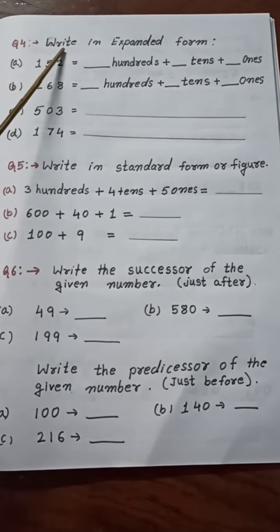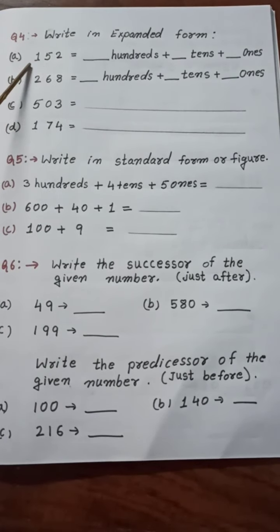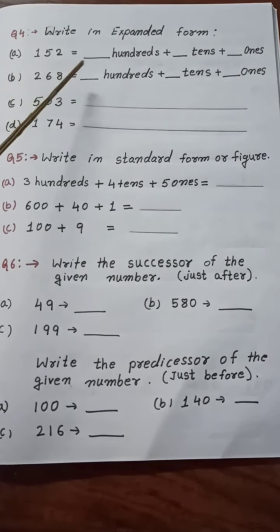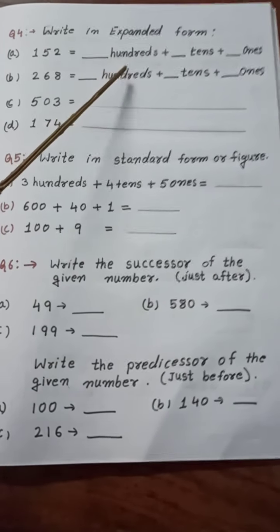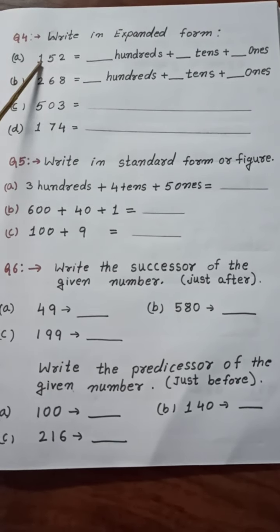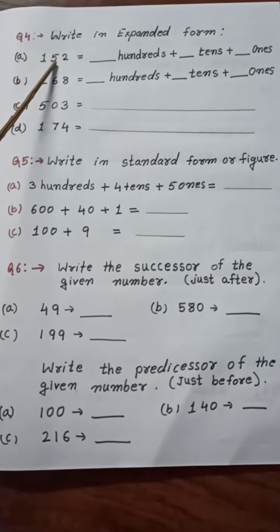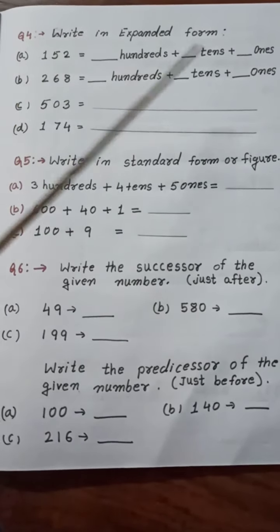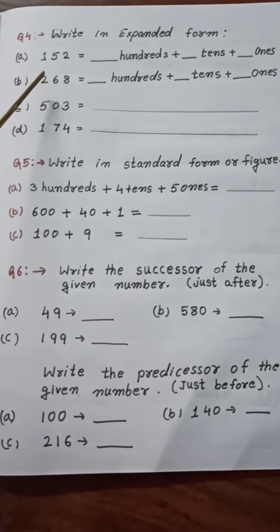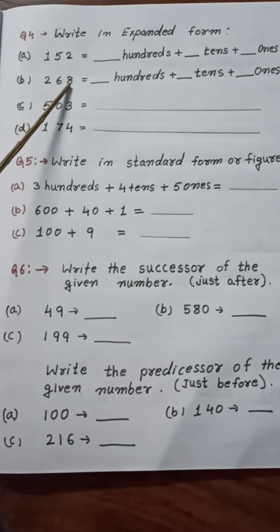Next question: write in expanded form. Here is given number 152 and we have to expand this number. The answer can come in two ways. First: 1 is at the 100s place, so we write 1 hundred. Then 5 tens and 2 ones. Same way here — 2 is at the 100s place, so we write 200, 6 tens, and 8 ones.